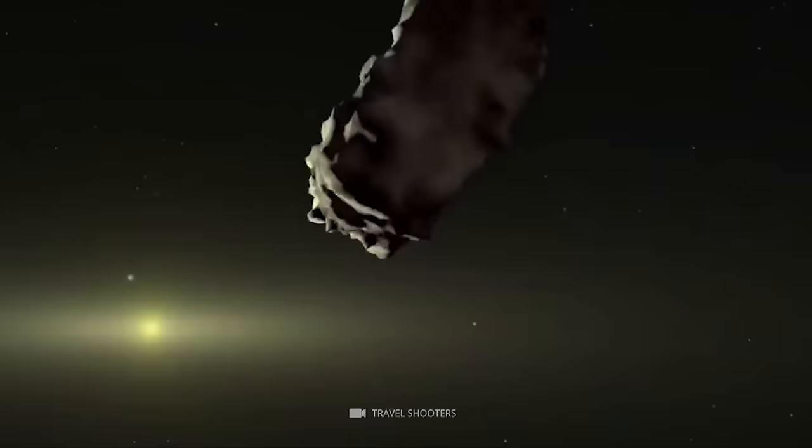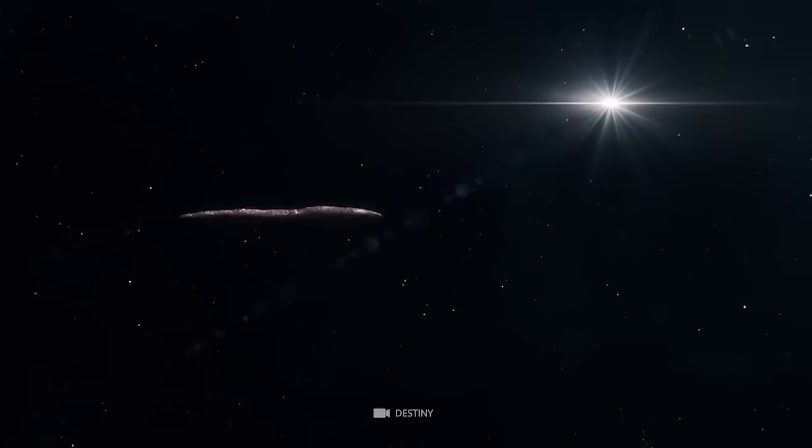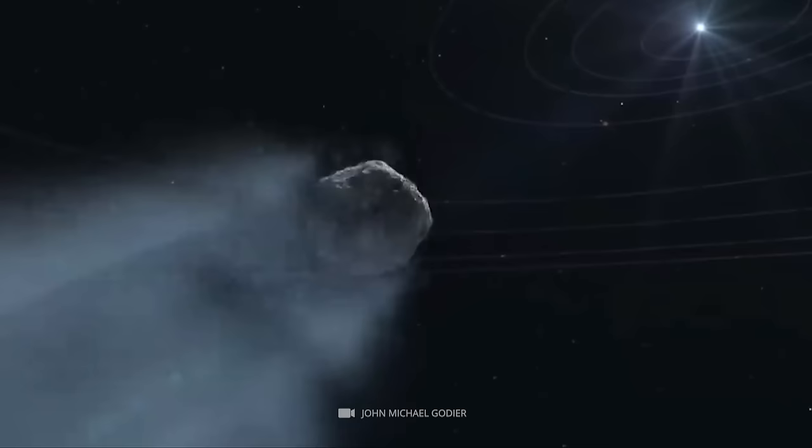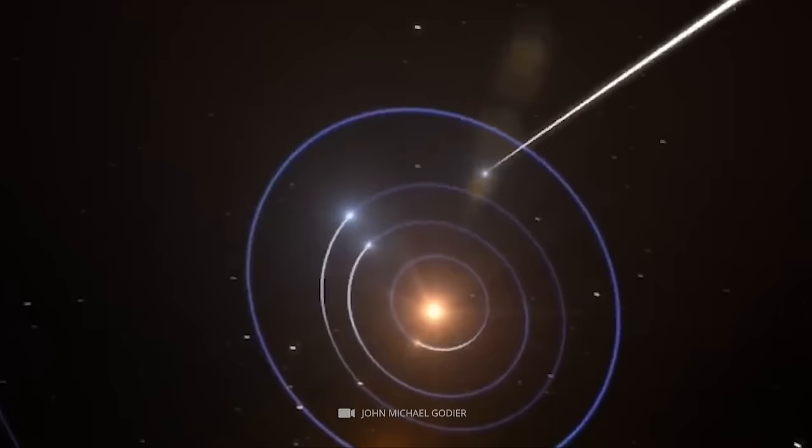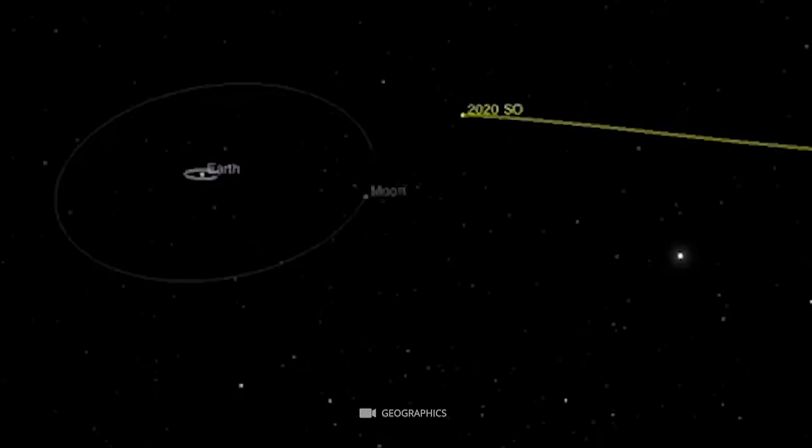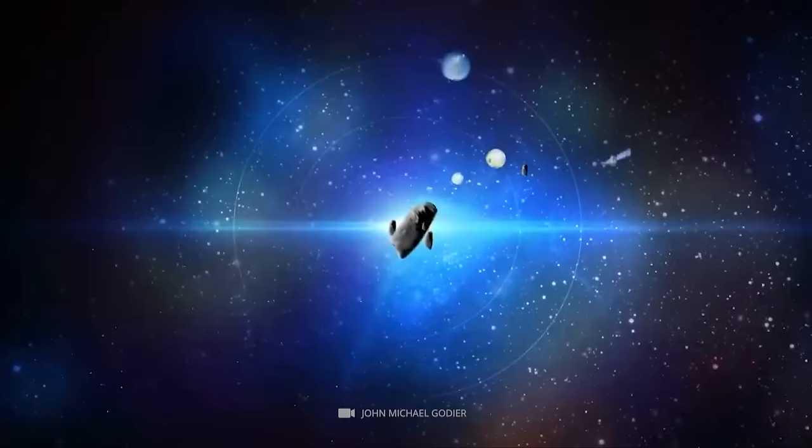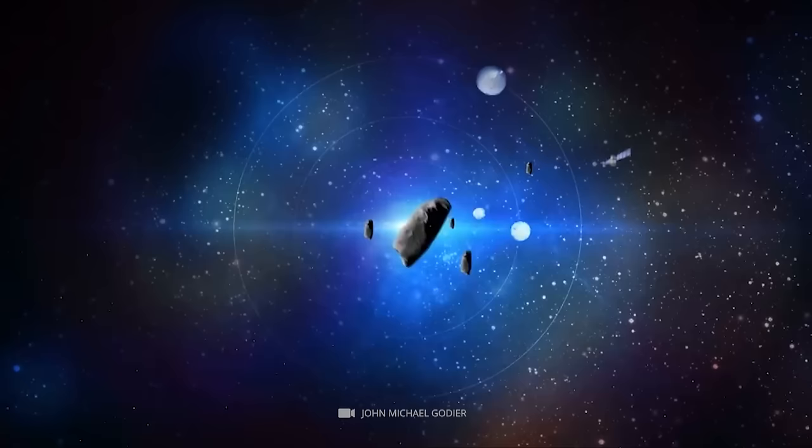Unlike regular comets, Oumuamua didn't have any coma. The object was also observed to be moving in a tumbling motion instead of a more traditional spinning motion of comets. It moves at a speed fast enough to escape the gravitational pull of the sun. This means that Oumuamua came from a different solar system and it would eventually leave our own. Its original planetary system is not known. Most scientists believe that Oumuamua is a natural object, but a few others believe that it is a product of alien technology, perhaps a drone sent to explore our solar system.